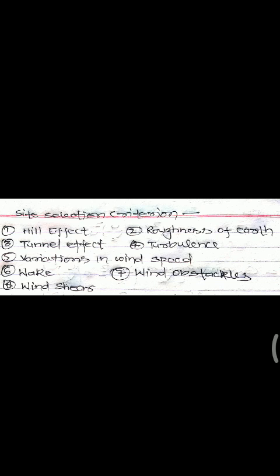One important parameter is the criteria for selection of an appropriate site for installation. The first criterion is the hill effect. When high-speed winds collide with hills, the wind goes to the top of the hill and its velocity increases. So generally at the top of the hill the system experiences relatively high velocity compared to flat land. Therefore it is beneficial to install the system at the top of the hill. This increase in velocity at the top of the hill is called the hill effect.